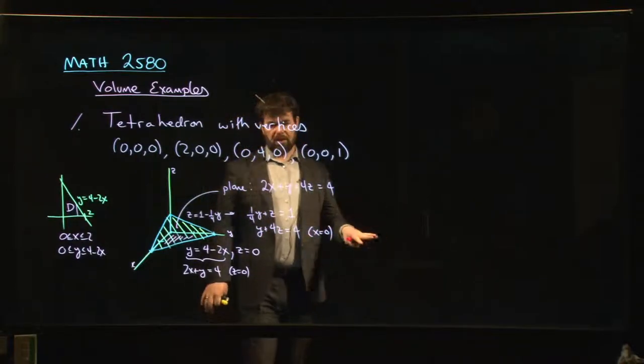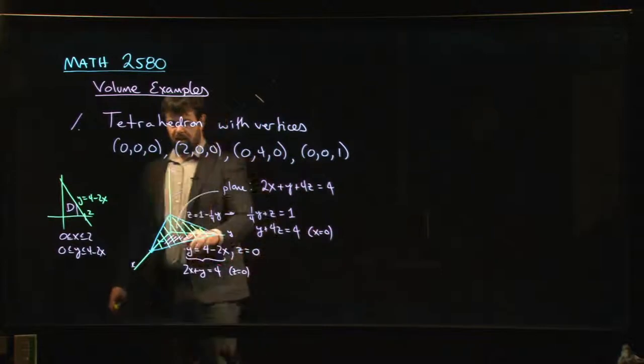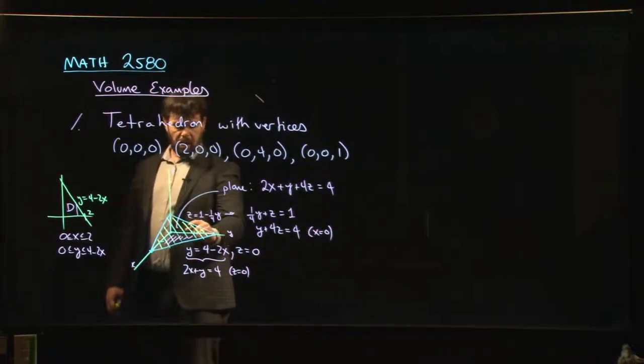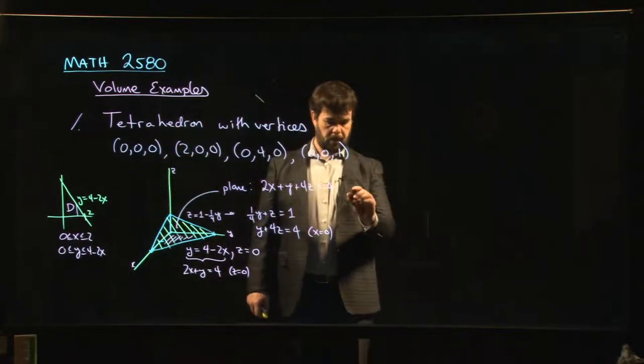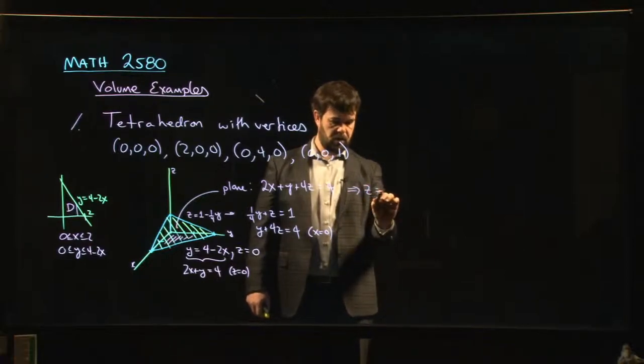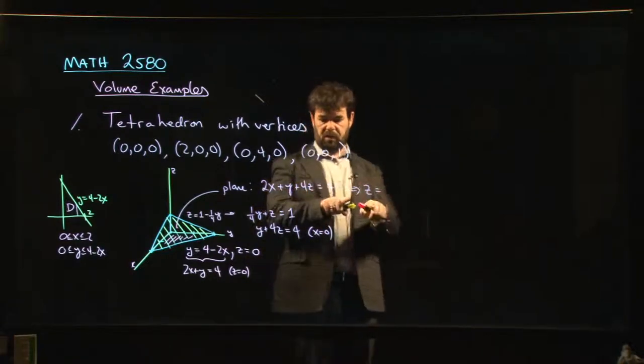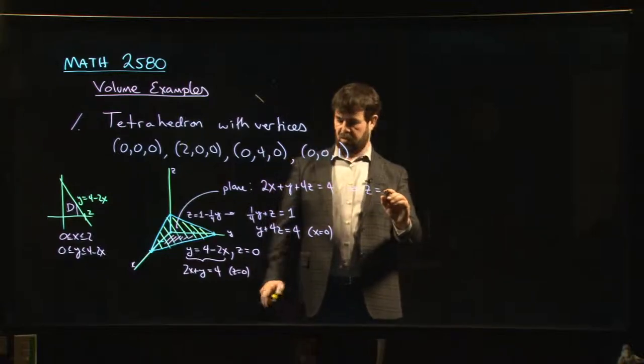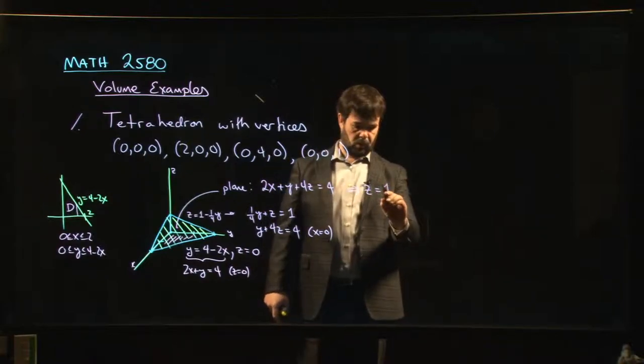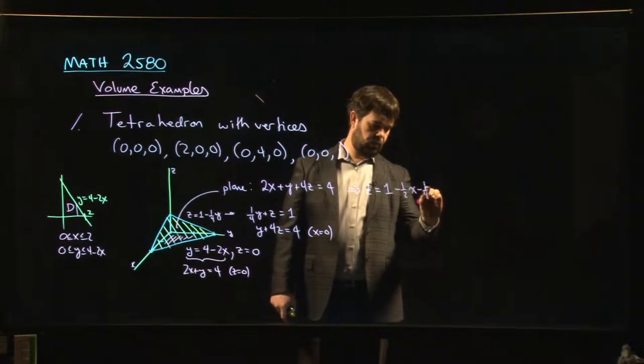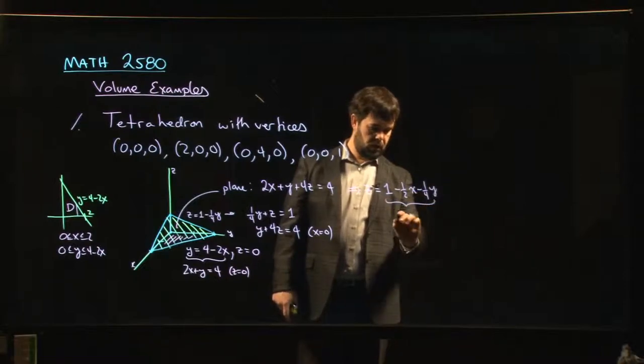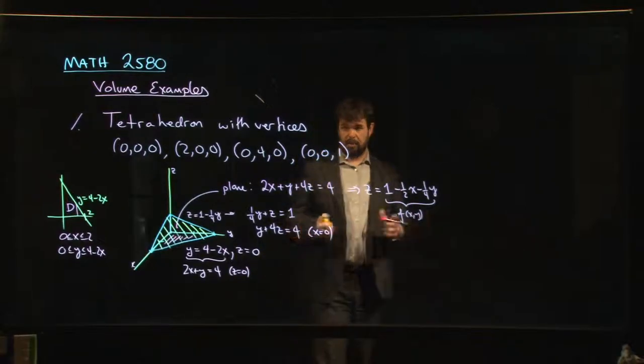Now, if I want to think of this as the graph where I'm writing Z as a function of X and Y, and I'm thinking of the graph over this region D in the plane, well, then I need to solve for Z here. So Z is going to be, well, let's move this stuff over to the other side. It's going to be, and I've got to divide everything by four. So it's going to be one minus one half X minus one quarter Y. And that's my F of X, Y.